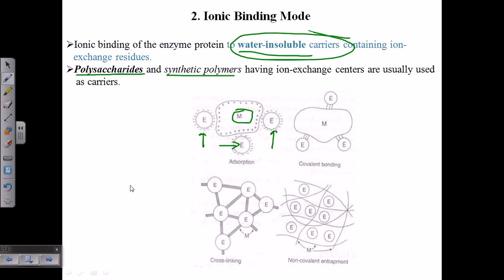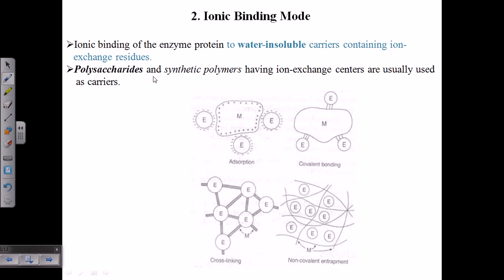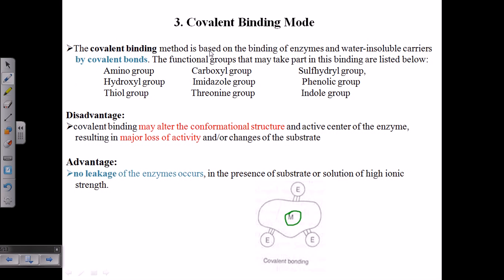The third type is the covalent binding mode. In covalent binding, the enzyme is attached to a matrix or carrier — similar types such as polysaccharides and synthetic polymers. The key difference from ionic binding is that the interaction between the enzyme and the matrix is via a covalent bond. This covalent bond is formed utilizing functional groups such as amino, carboxyl, sulfhydryl, indole, thiol, and hydroxyl groups.